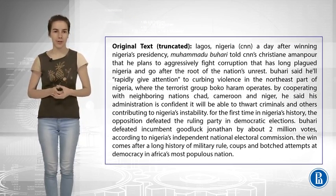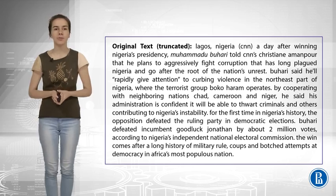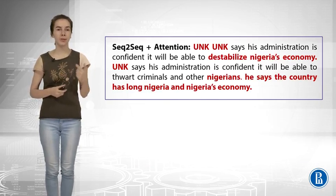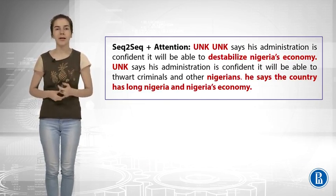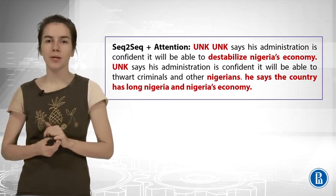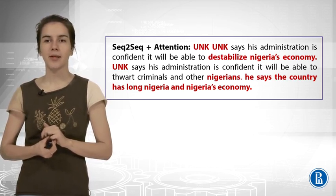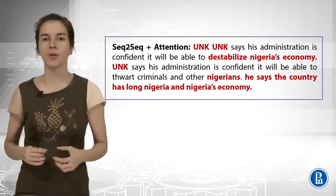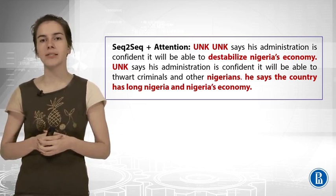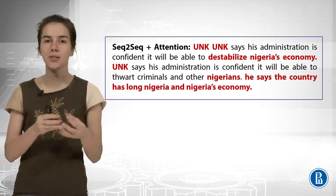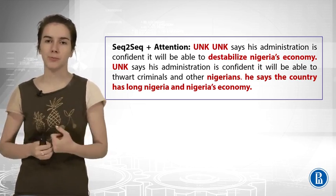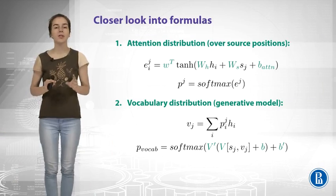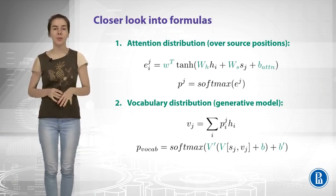Let us see how it works. We have some sentences and we try to get a summary. First, we see some UNK tokens because the vocabulary is not big enough. Then we also have the problem that the model is abstractive — the model generates a lot, but it doesn't know that sometimes it would be better just to copy something from the input. The next architecture will tell us how to do it. Let us have a closer look at the formulas, and then see how we can improve the model.